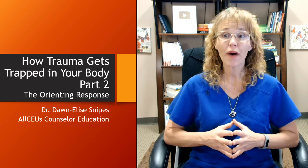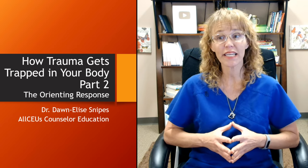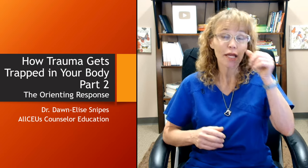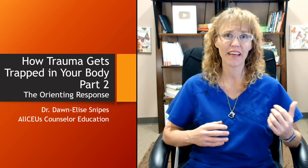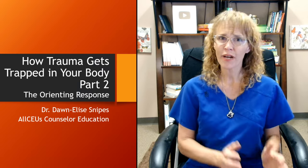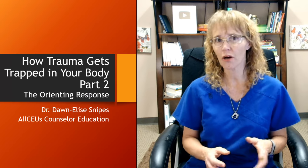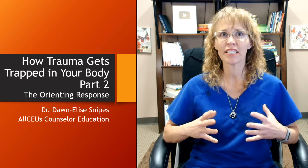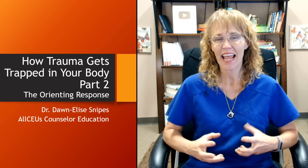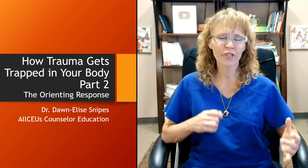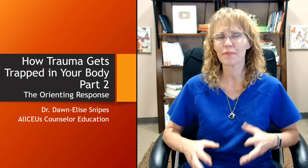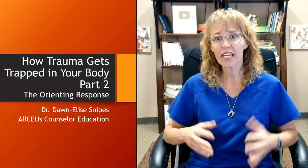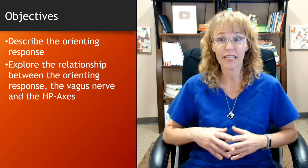Welcome back to 'How Trauma Gets Trapped in Your Body,' part two — the orienting response. In part one we talked about the vagus nerve. I'm breaking these up into what I call micro videos — really short videos — because this information is really dense and in order to understand how this happens, it's important to be able to digest each chunk. In this video we're going to talk about the orienting response.